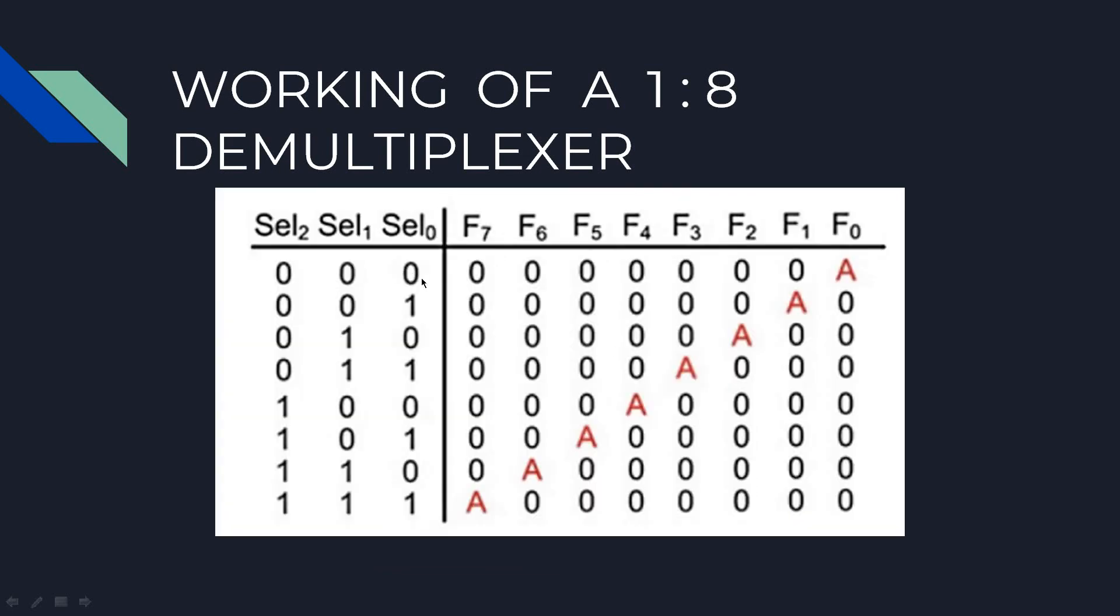If your selection lines are 0,0,0 your F0 is A, where A is the data signal which can either be 0 or 1. For 0,0,1, F1 is A. For 0,1,0, F2 is A. For 0,1,1, F3 is A. For 1,0,0, F4 is A. For 1,0,1, F5 is A. For 1,1,0, F6 is A. For 1,1,1, your F7 is A.